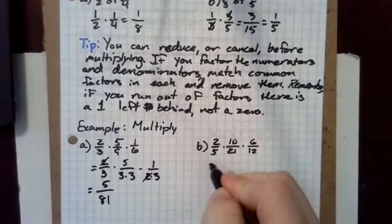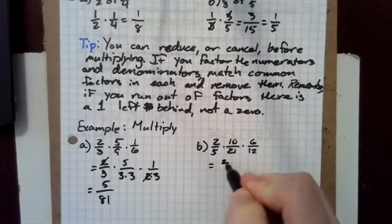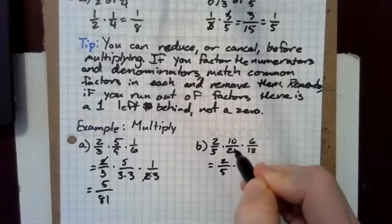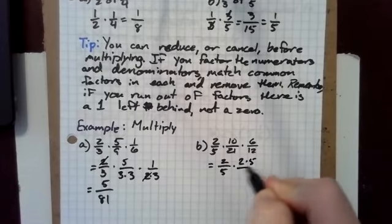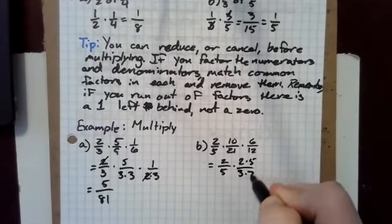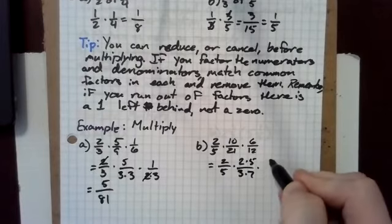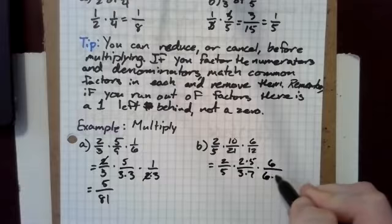For this one, I've got a two, a five. 10 is two times five. 21 is three times seven. And then I'm going to leave the six as it is because 12 is six times two.